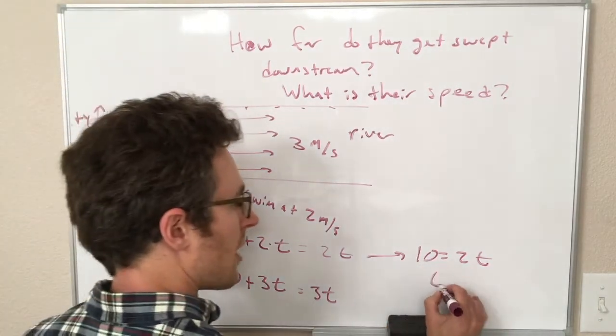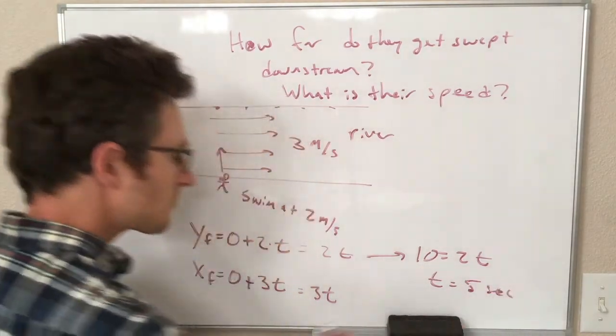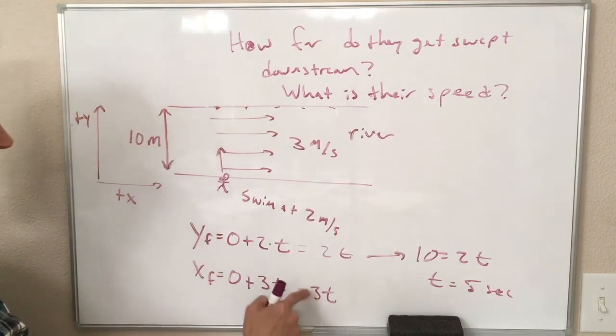So, if 10 equals 2t, that means t is equal to 5 seconds,